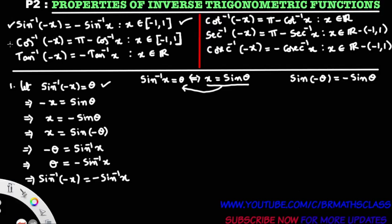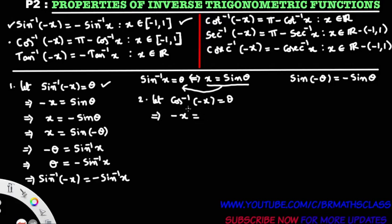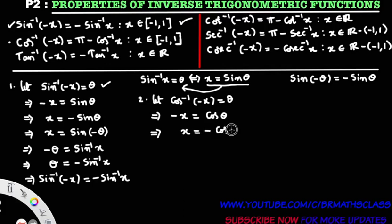Now I will prove the second result: cos inverse of minus x equals to pi minus cos inverse x. Let cos inverse of minus x equal to theta. From the definition of inverse cosine function, minus x equals to cos theta. Multiply with minus on both sides — x equals to minus cos theta.